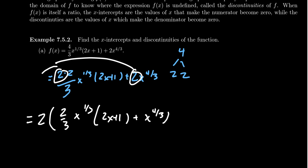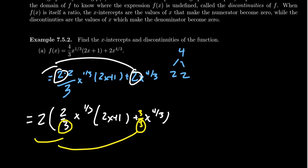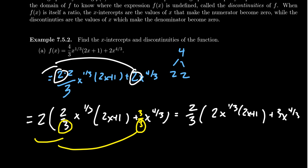Another thing we want to do when factoring is avoid fractions if we can. The first term has a 1/3 as a factor; the other doesn't, but you can insert a 1/3 by multiplying by 3/3. So we factor out the 1/3 common to both. I'm going to take out 2/3, which will leave behind 2 times x^(1/3) times (2x+1), and then 3 times x^(4/3). So as you factor out your GCD, I'd recommend clearing denominators in the process.